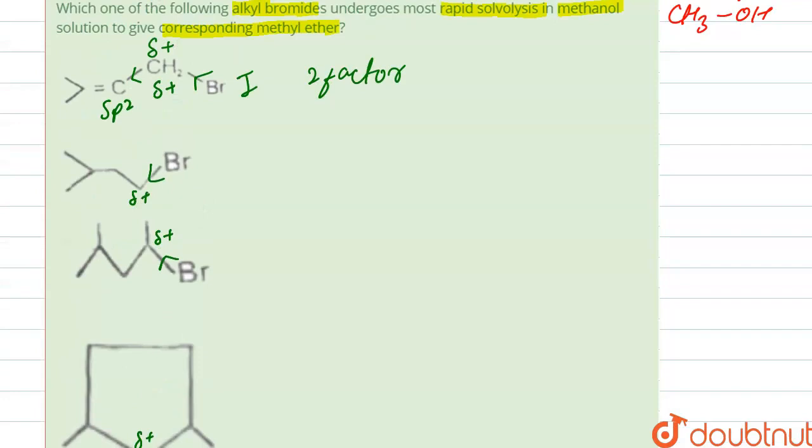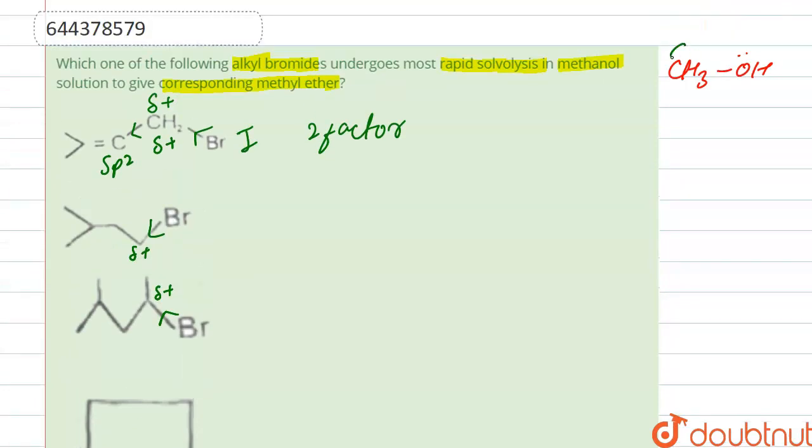But here if you see that CH3OH is weak nucleophile, so it shows SN2 reaction, SN2 mechanism, and it attacks with the backside. So here it is a primary carbocation and here it is also primary carbocation.